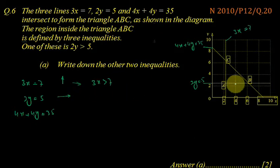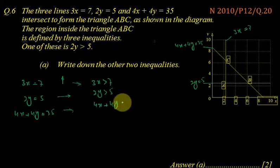And similarly, above this line, so we put greater than 2y greater than 5, it is also given. And the third one is the region below this line, so we write 4x plus 4y less than 35.